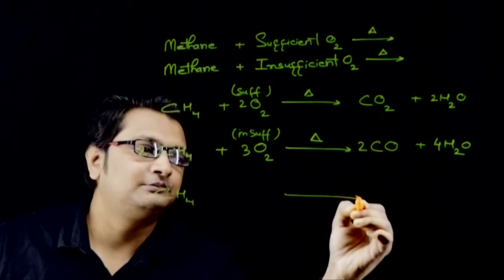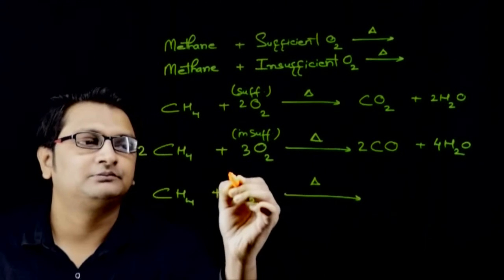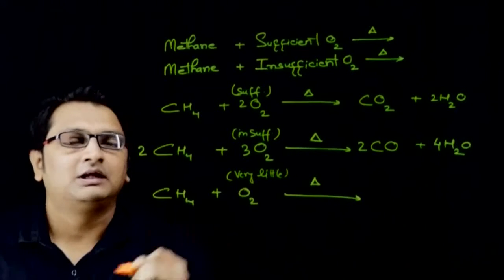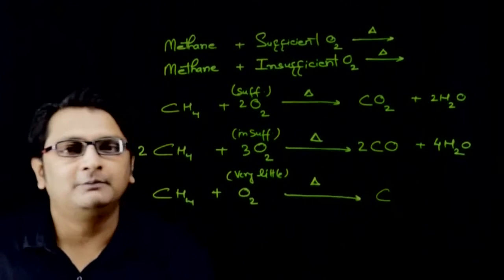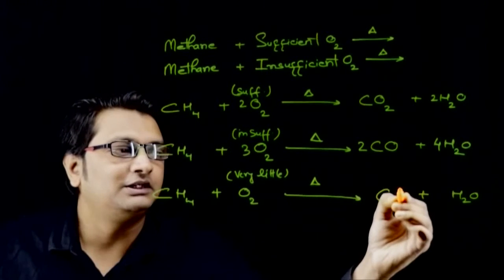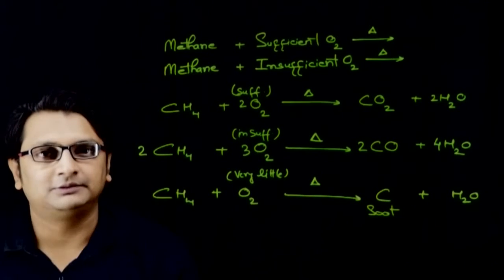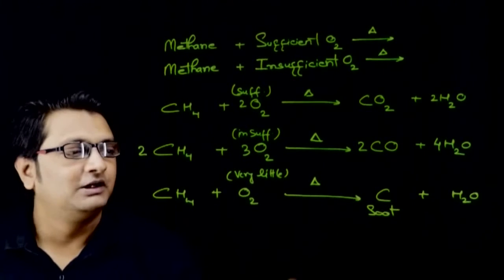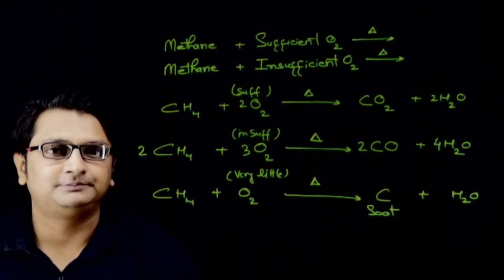But again, if you will burn methane gas with very little amount of oxygen, carbon precipitate is formed along with water vapour due to heat. This is formed in the form of soot. This soot is useful in the manufacture of printing inks and also in the manufacture of tyres.